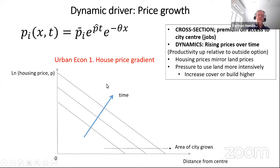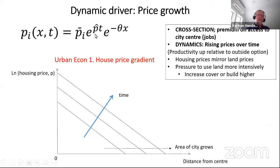Why a dynamic model? In static models, when the price gradient shifts up, you redesign the city overnight — everything is malleable and you just have a succession of static equilibria. Here, you're going to build tall buildings that last a long time and you have to judge how high to build them now, given prices are going to rise in the future.